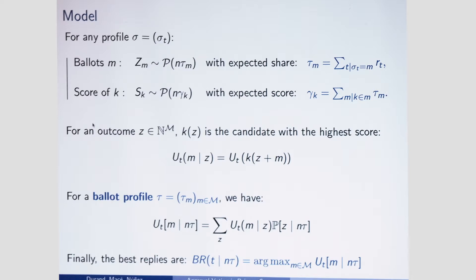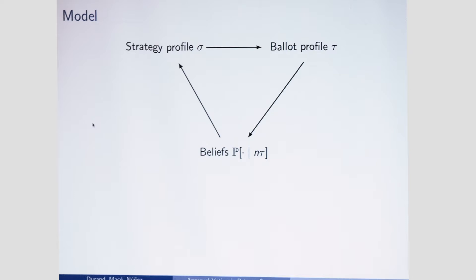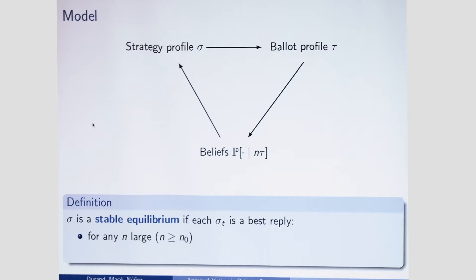From a given strategy profile we define the ballot profile. With the Poisson probability model, the ballot profile defines beliefs over events that may happen, and from the beliefs we define the best reply of the voter. My definition of a stable equilibrium is specific: sigma is a stable equilibrium if each sigma_t is the best reply both for large N, and also the best reply not only for the tau associated to sigma but for any tau prime arbitrarily close to tau. This means the equilibria are stable and robust to a small dose of aggregate uncertainty.